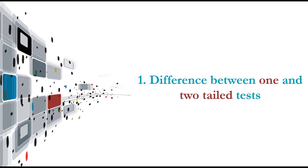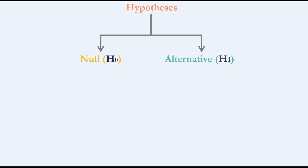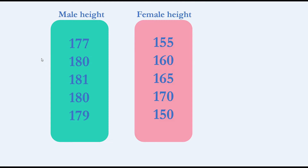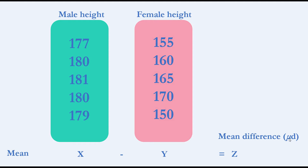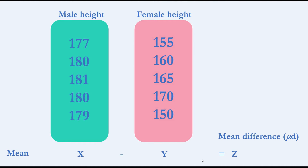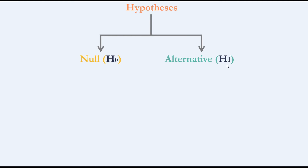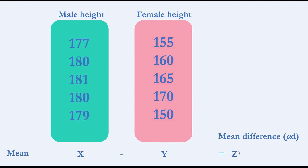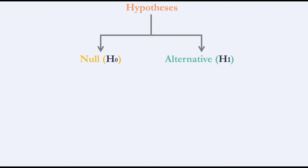Let's start with the difference between one and two tail tests. We run hypothesis testing to determine if our claim is true or not, so we have the null hypothesis and the alternative hypothesis. For example, we have two groups — male and female — and we measure their height, then calculate the mean of each group and the mean difference. The null hypothesis assumes that the mean difference is equal to zero, meaning there is no difference in height between male and female.